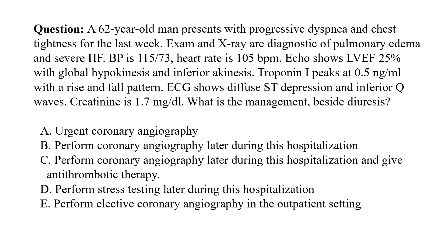Question. A 62-year-old man presents with progressive dyspnea and chest tightness for the last week. Exam and X-ray are diagnostic of pulmonary edema and severe heart failure. Blood pressure is 115 over 73 and heart rate is 105. Echo shows EF of 25% with global hypokinesis and inferior akinesis. Troponin I peaks at 0.5 nanogram per milliliter with a rise and fall pattern. ECG shows diffuse ST depression and inferior Q waves. Creatinine is 1.7.